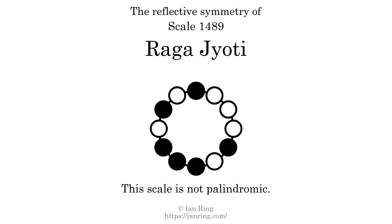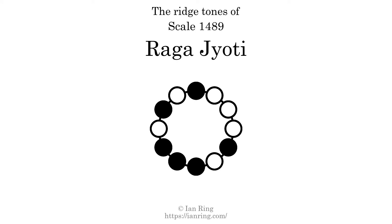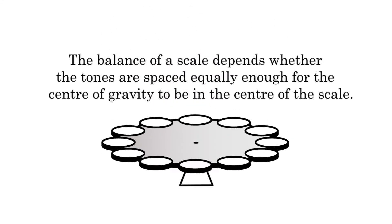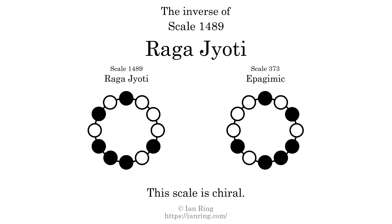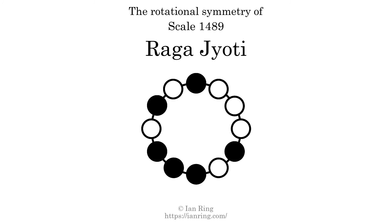This scale has no reflective symmetry. This scale has a different pattern of intervals ascending and descending, so it is not palindromic. This scale has no ridge tones. The balance of a scale depends whether the tones are spaced equally enough for the center of gravity to be in the center of the scale. This scale is not balanced. The inverse of a scale is a mirror image — it is what you get when the sequence of intervals is reversed. The inverse of this scale is scale 373, also known as epigemic. This scale is chiral; it cannot transform into its inverse by rotational transformation. This scale has no rotational symmetry.